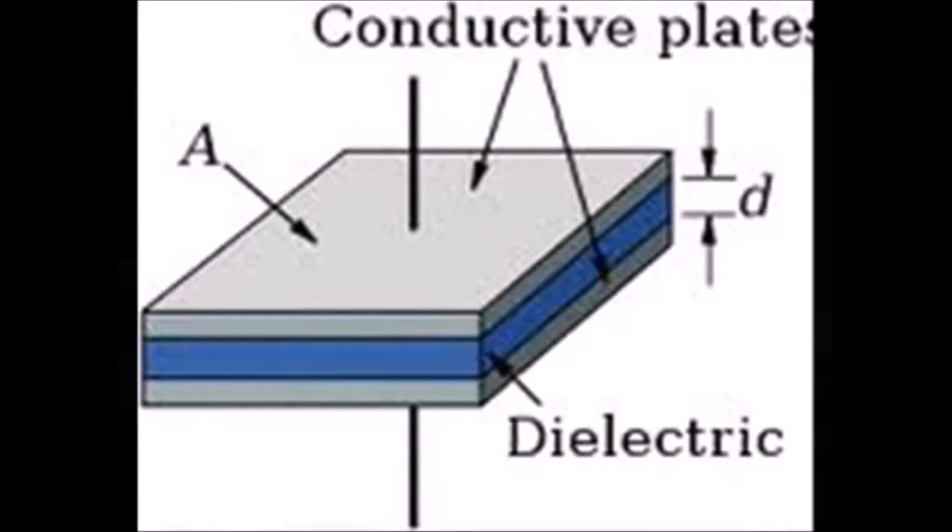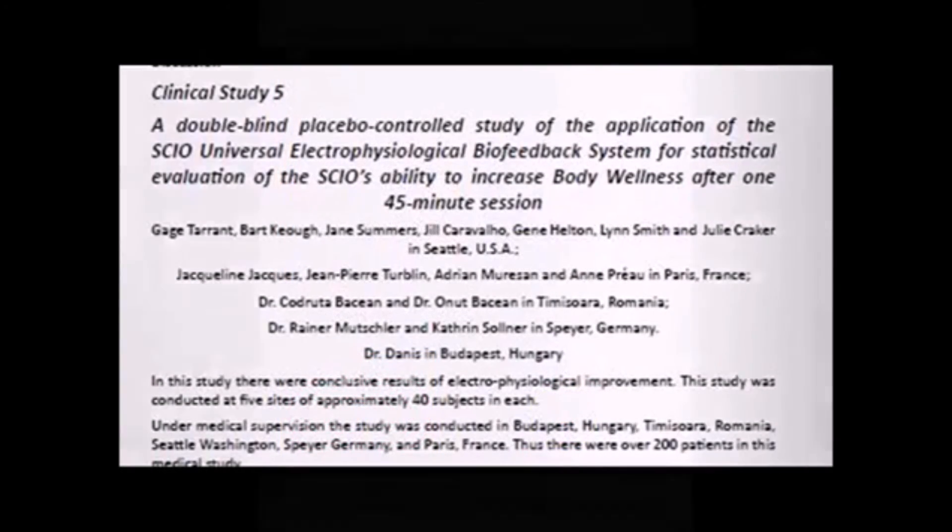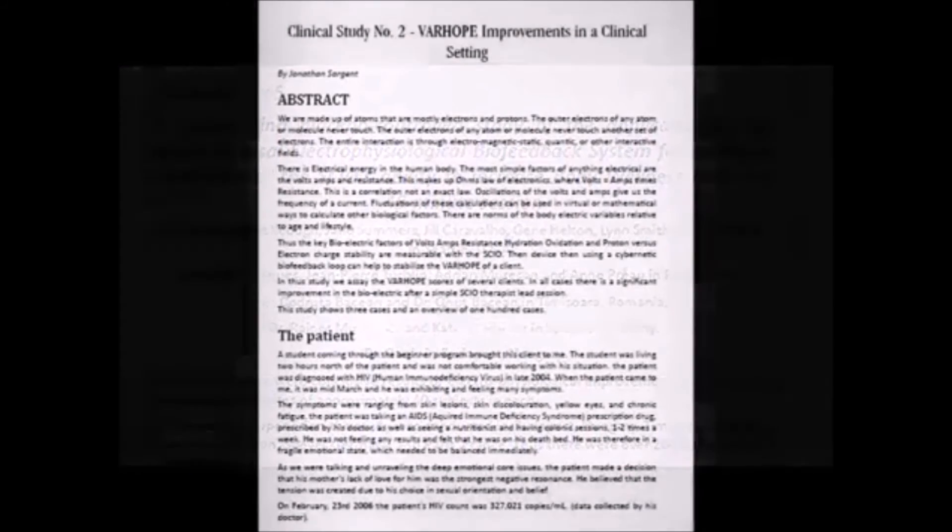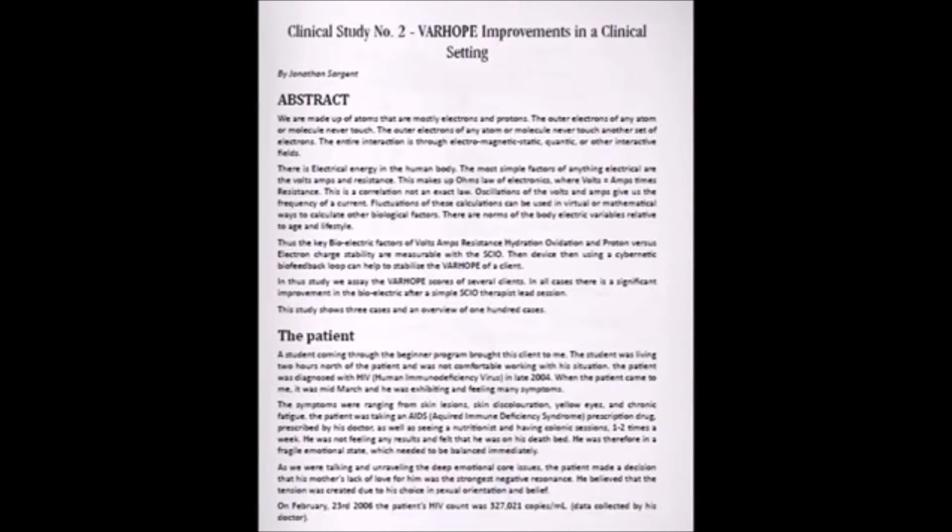And that can give us hydration scores or oxidation scores. The capacitance scores give us a reflection of the electrolytic strength, which is a correlate of the hydration. The inductance or magnetic can tell us about the oxidation redox potential and thereby give us an indication of oxidation in the body.